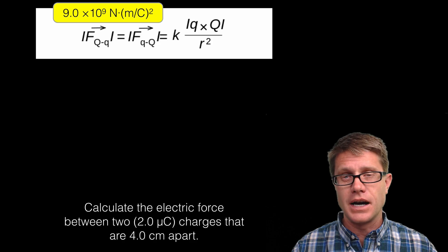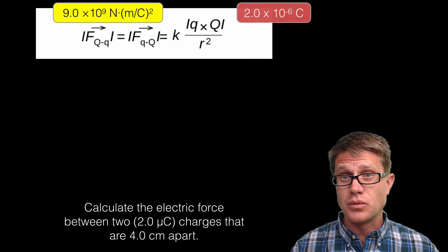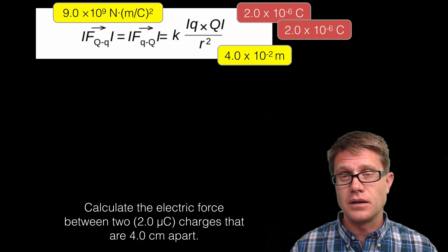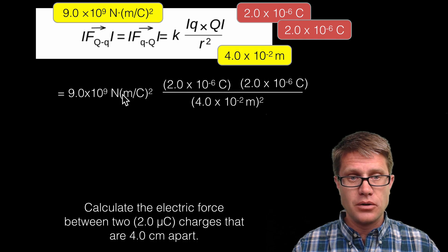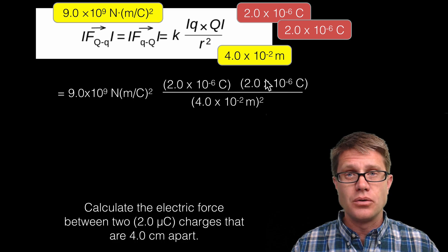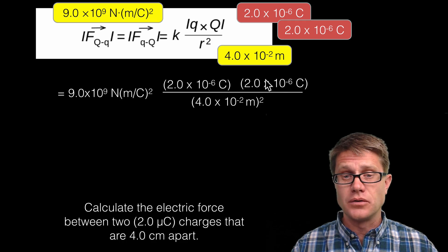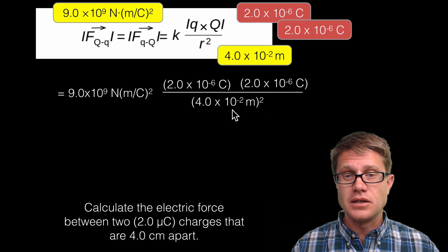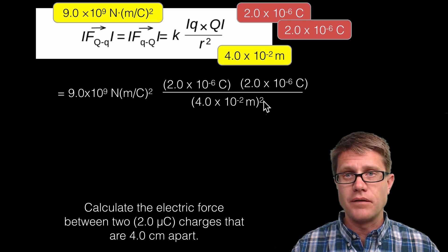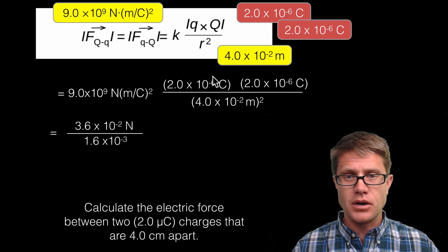I know Coulomb's constant — that is 9 times 10 to the 9th. My two charges are each 2.0 times 10 to the negative 6th coulombs, and the distance is 4.0 times 10 to the negative 2nd meters. I place Coulomb's constant and the two charges on top, and since they are both positive I use the absolute value. Then I take the distance between the two and square that value on the bottom — that is a common mistake, not squaring that value will screw up your answer.